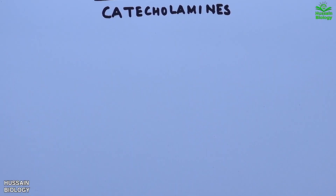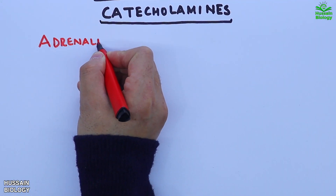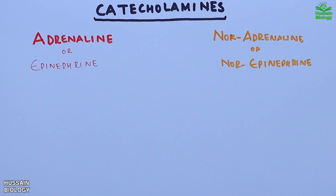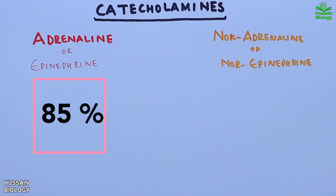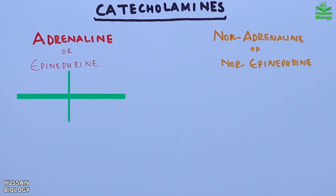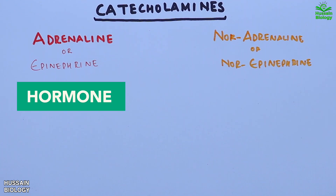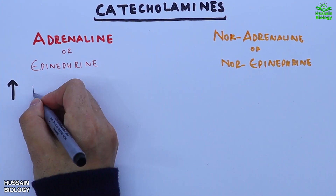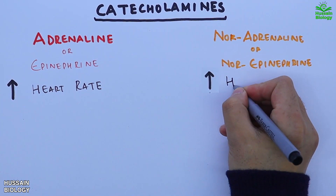Finally, we get catecholamines from the adrenal medulla — adrenaline (epinephrine) and noradrenaline (norepinephrine). When stimulated, the adrenal medulla secretes a mixture of about 85% epinephrine and 15% norepinephrine into the bloodstream. An important distinction: epinephrine is a hormone only, while norepinephrine functions as both a hormone and a neurotransmitter. Acting as a neurohormone, both epinephrine and norepinephrine increase heart rate.